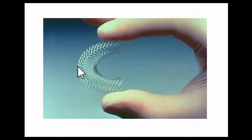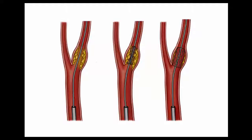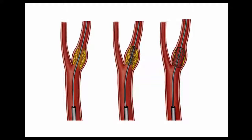A stent is a wire mesh mounted on a balloon, and it is placed at the site of plaque formation. For carotid stenting, a catheter is brought up and through it a guide wire is passed, which has an umbrella-like basket at the top to prevent any clot or debris from entering the brain. The stent is then placed in position at the site of the plaque buildup.